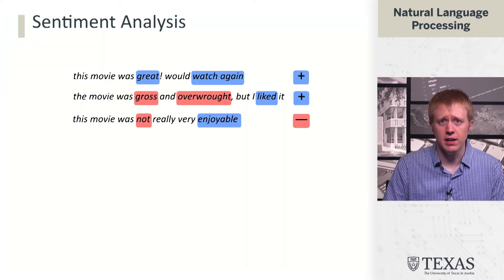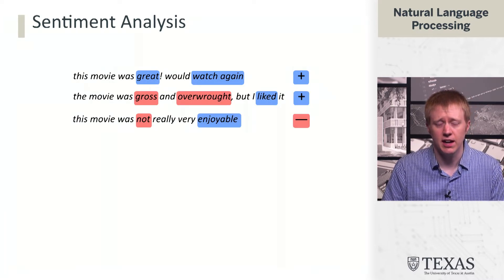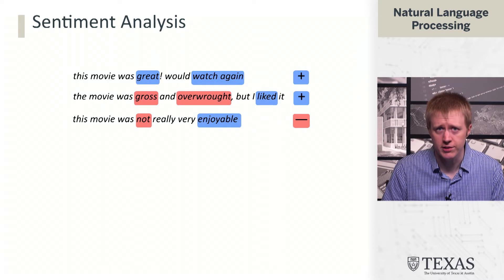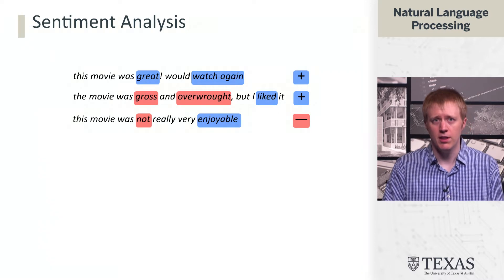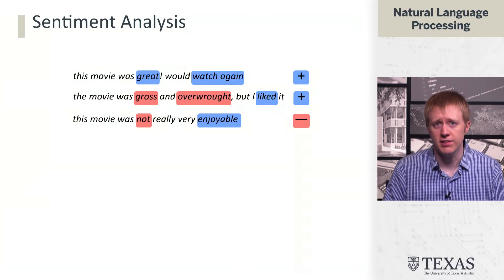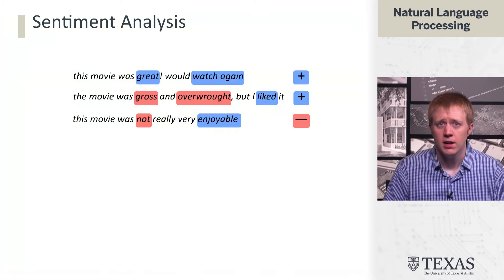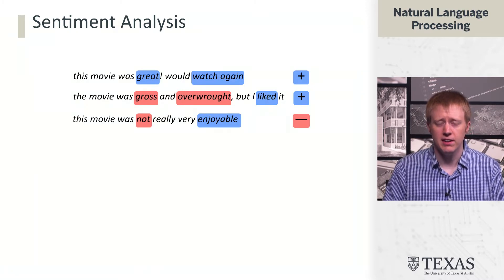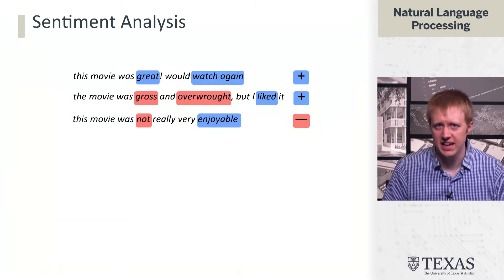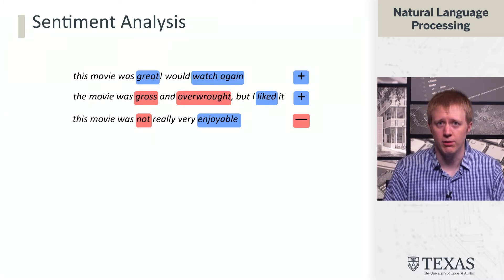If we think about other examples, this works out well sometimes, but sometimes not so great. For example, 'The movie was gross and overwrought, but I liked it.' In this case, we have two negative sentiment words — gross and overwrought — but the person then says 'but,' and that sort of negates everything that came before.